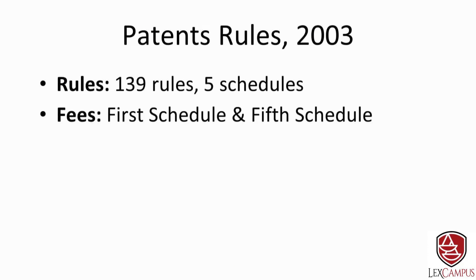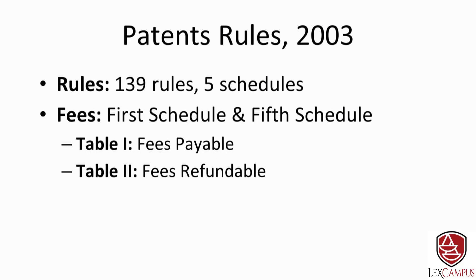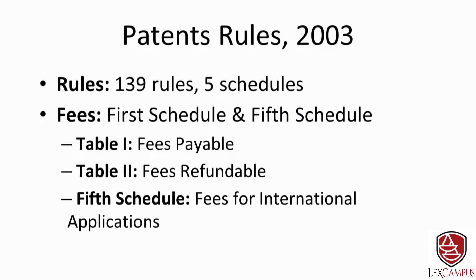The Patent Rules 2003 comprises 139 rules and 5 schedules. The first schedule and the fifth schedule deal with fees — the official fees payable before the patent office when an application is prosecuted. The first schedule is further classified into Table 1, which covers fees payable for various events, and Table 2, which covers refundable fees. The fifth schedule covers fees for international applications.